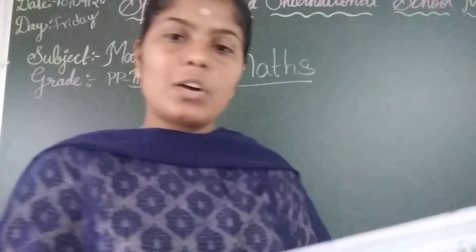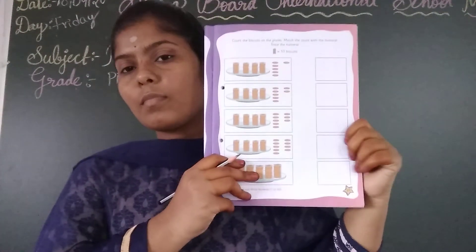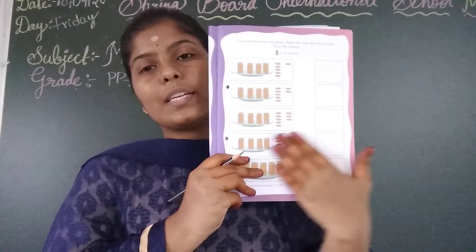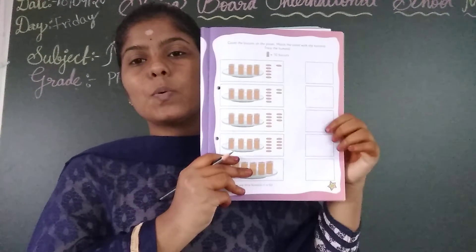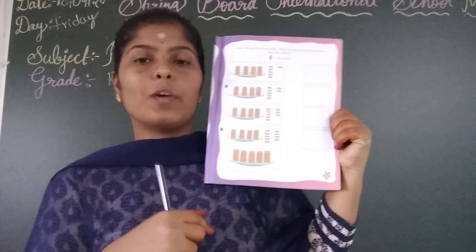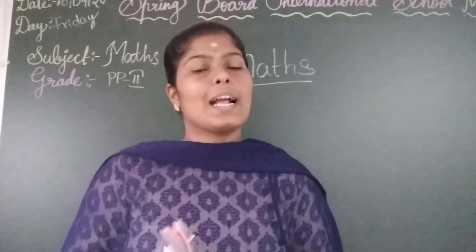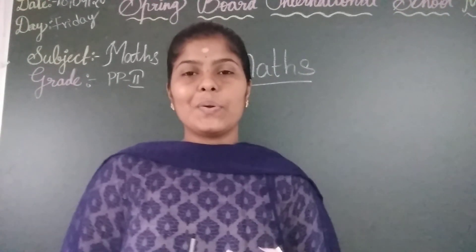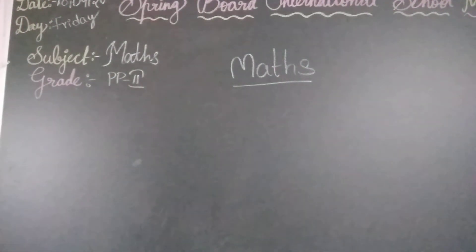Today's homework for you is page number 23. Children, you are already done with these activities from the previous two days. So do page number 23 as your homework. Okay children, that is all for today. Complete your homework — page number 23. Have a good day, children. See you tomorrow. Bye bye, thank you.